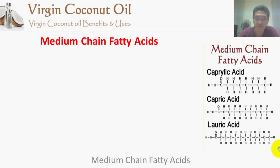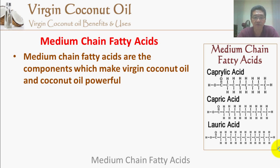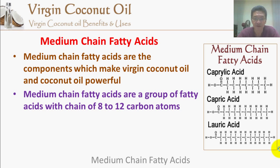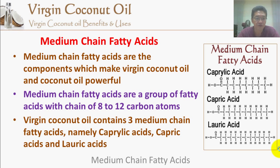What are medium chain fatty acids? Medium chain fatty acids are the components which make virgin coconut oil and coconut oil powerful — that's what gives them the power over other oils and other fats. They are essentially a group of fatty acids with a chain of 8 to 12 carbon atoms. The virgin coconut oil contains three medium chain fatty acids: caprylic acid, capric acid, and lauric acid.